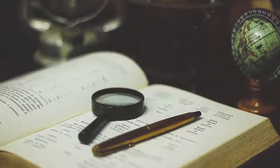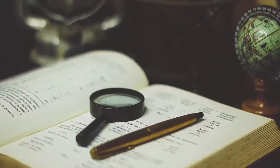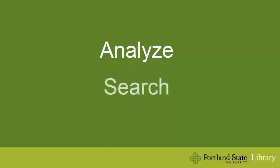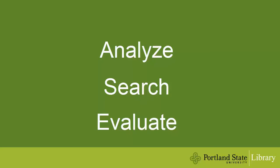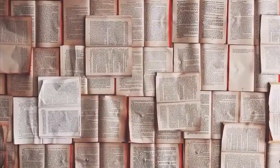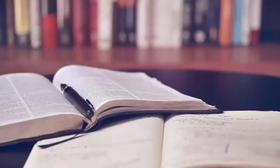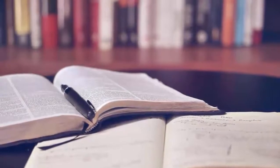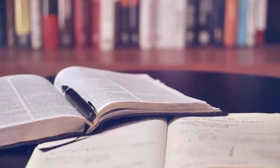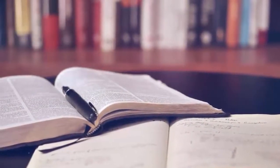So you've been given a research assignment — now what? Good research stems from analyzing your chosen topic, searching for relevant sources such as books or scholarly articles, and evaluating those sources to determine whether or not they can be used to bolster your argument or answer your question. Thinking less about how many sources you need and more about what you might do with your sources can help you write a paper in which you contribute to the scholarly dialogue about your chosen topic.